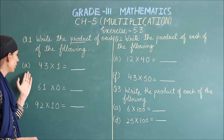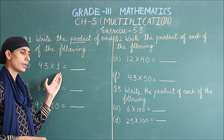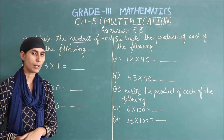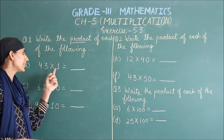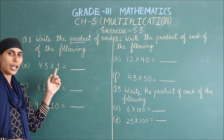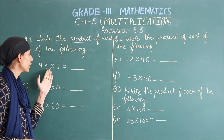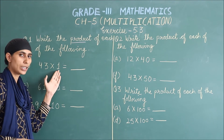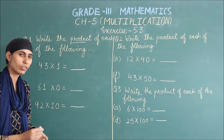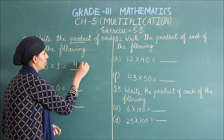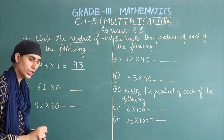Come to the A part: 43 multiply by 1. ابھی میں نے آپ کو property بتائی تھی — any number multiply by 1، آپ کا answer کیا ہوگا؟ Number itself. So, 43 کو 1 سے multiply کیا — 43 ones are 43.